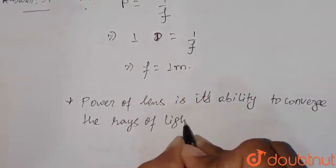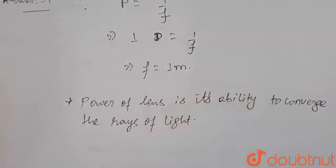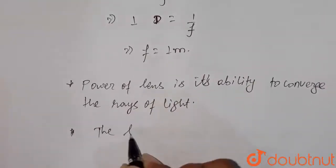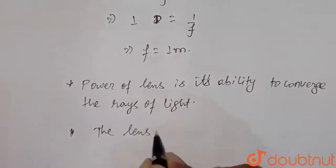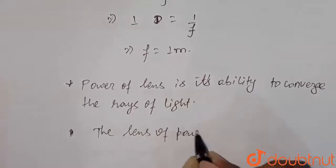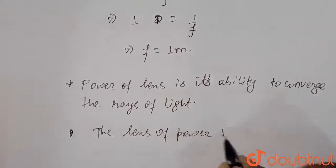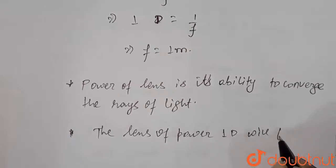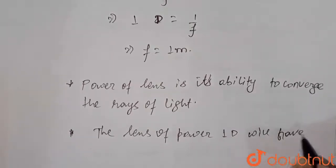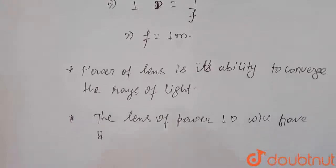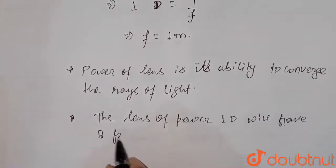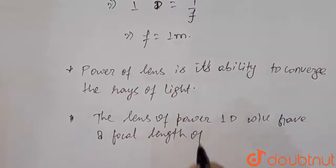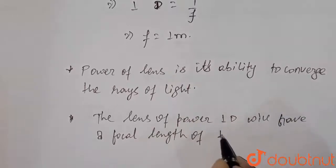So, the lens of power 1 diopter will have a focal length of 1 meter.